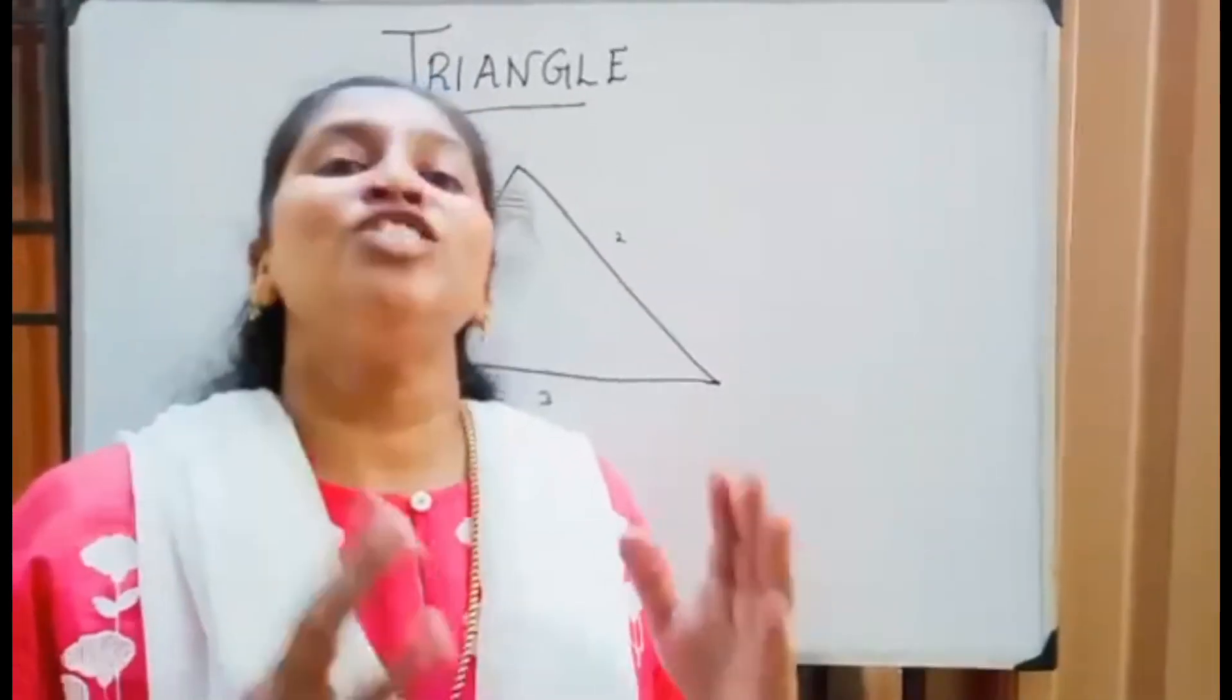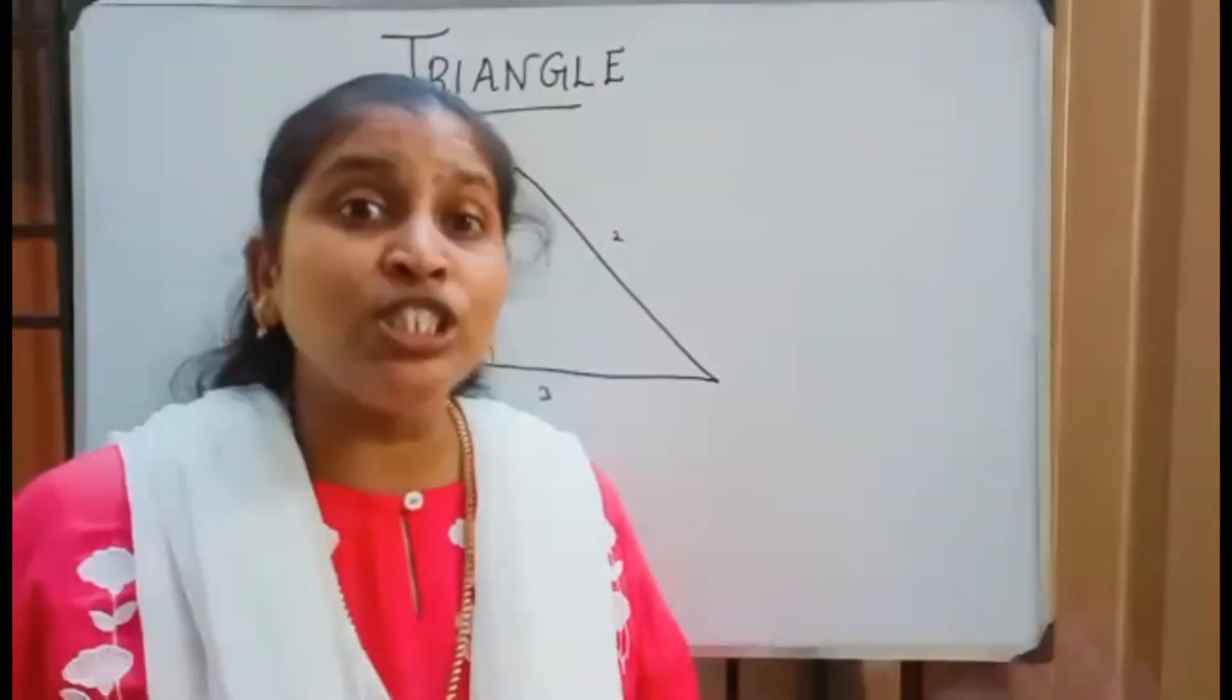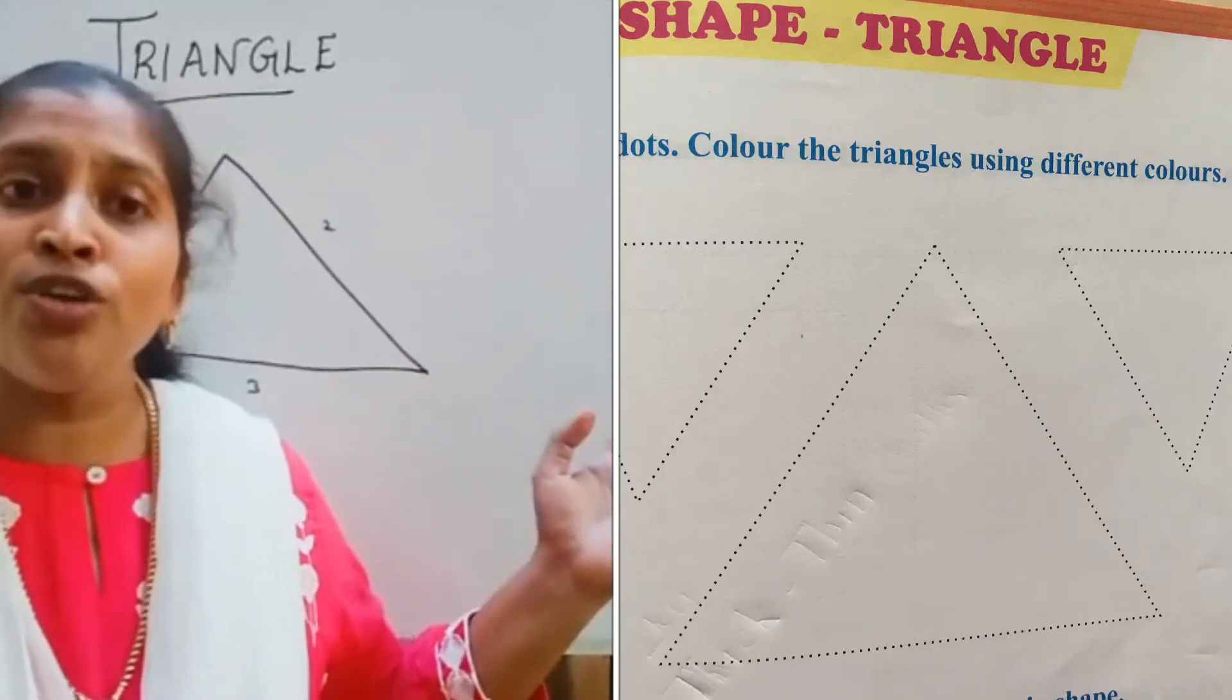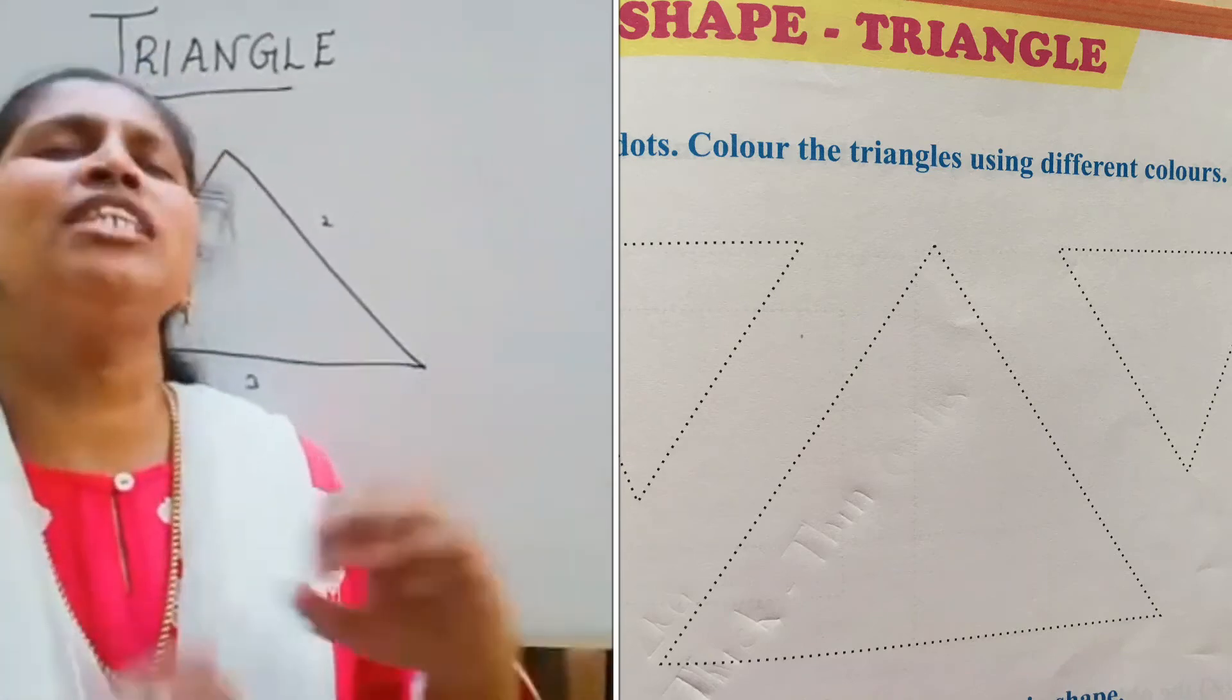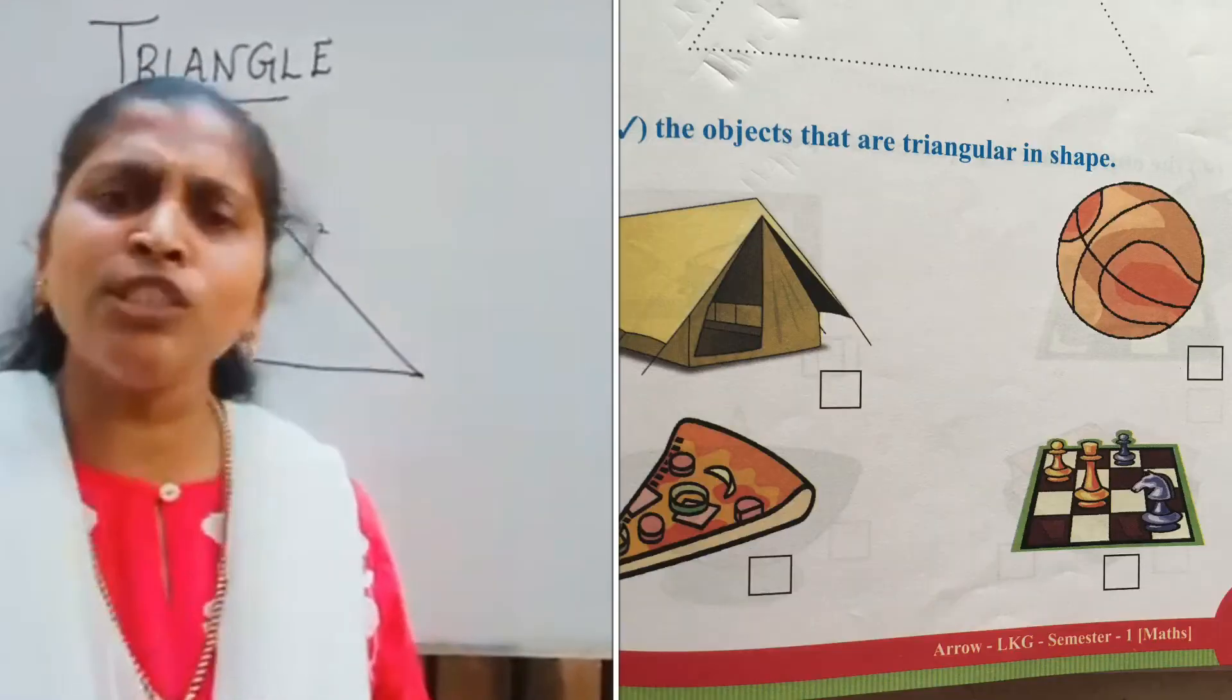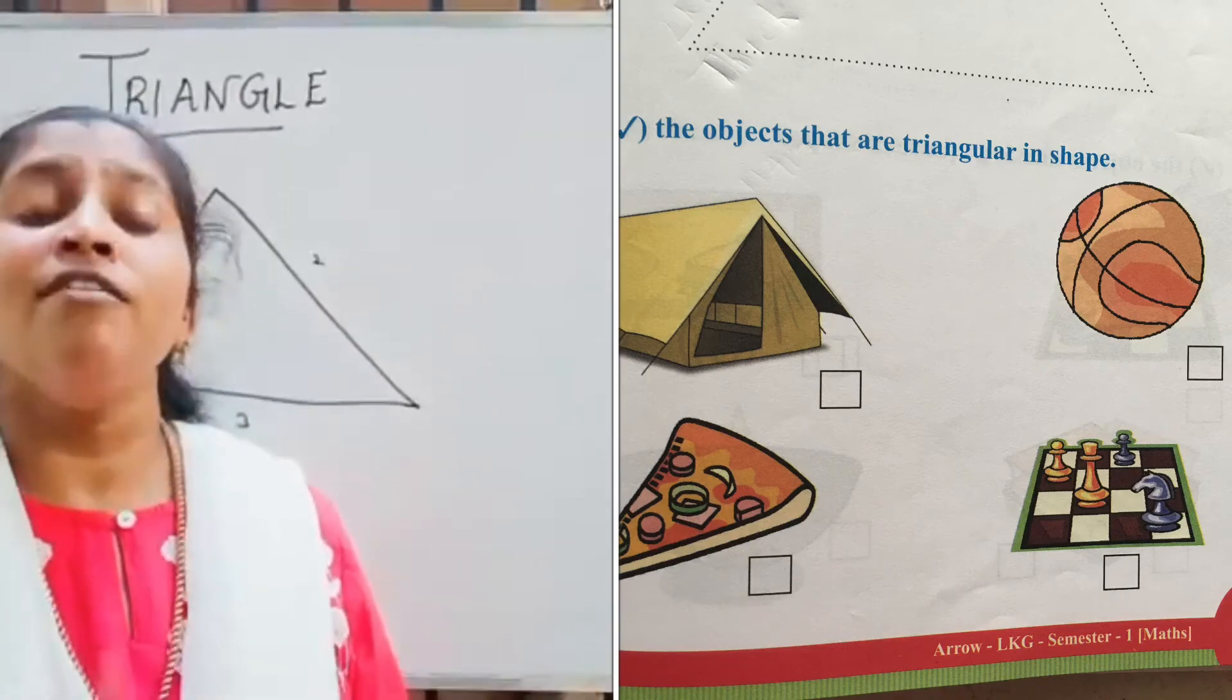There are many triangles which are around us. See the activity sheets which I'm showing you. What you need to do is join the dots, color the triangle using different colors. You should join the dots and color the triangles.